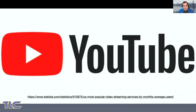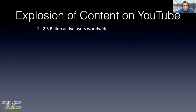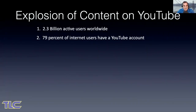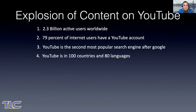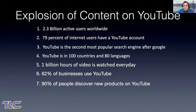Where do they watch? YouTube. As of September 2019, YouTube had 163.75 million monthly active users, and it's much more by 2021. Second place Netflix has only 46.55 million; Hulu has 26.5 million. YouTube has 2.3 billion active users, 79% of internet users have an account, and it's the second most popular search engine after Google — which also owns YouTube. It's in 100 countries and 80 languages. One billion hours of video is watched every day. 62% of businesses use YouTube, and 90% of people discover new products and services on YouTube.